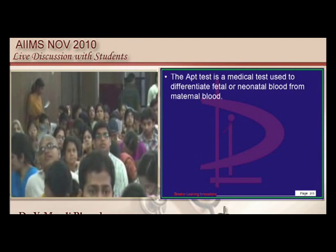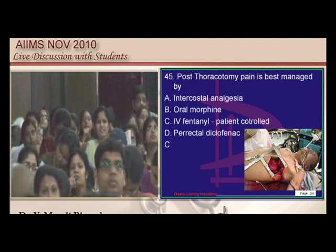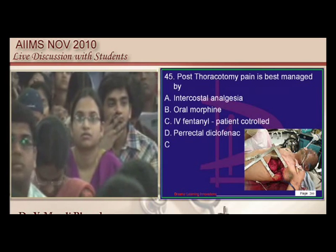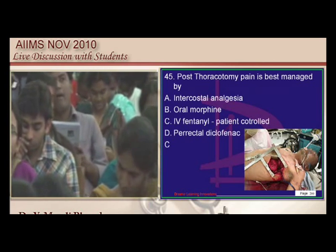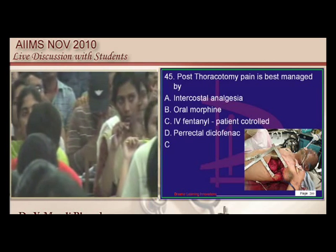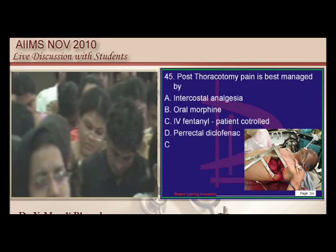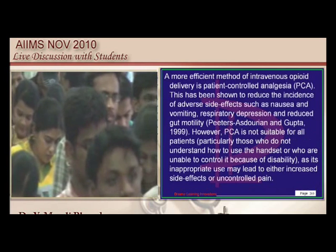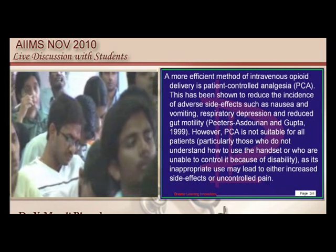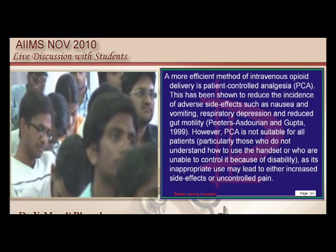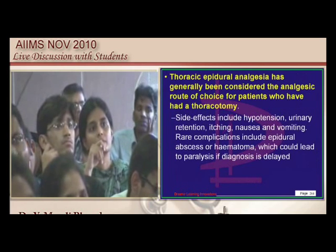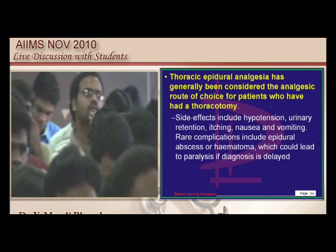Post-thoracotomy — what is the best way to manage pain? Ideally, epidural analgesia is the first choice. The second option is intravenous opioids like fentanyl via PCA — patient-controlled analgesia — where the patient controls the dose based on pain level. Epidural analgesia remains the best for post-thoracotomy pain relief.